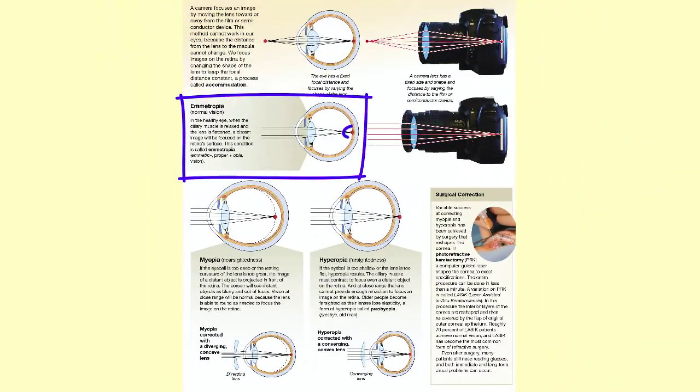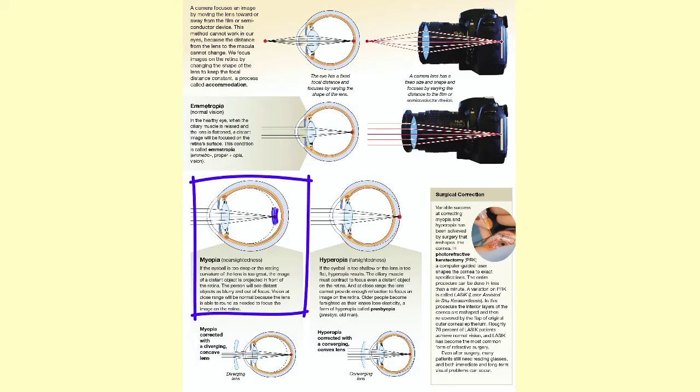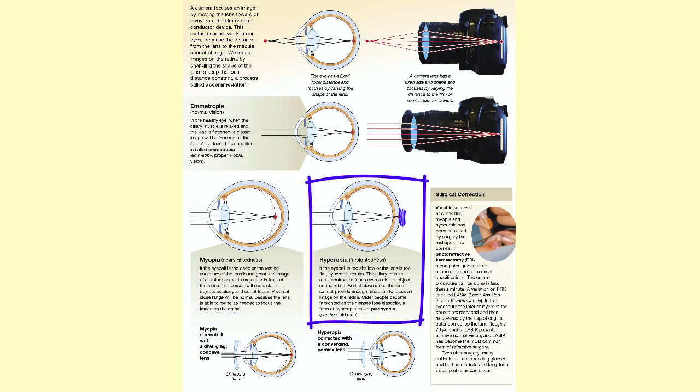In summary, in normal vision refracted light properly focuses on the retina. In nearsightedness, the image focuses in front of the retina and is corrected with a diverging lens. While in farsightedness, the light focuses behind the retina and is corrected with a converging lens.